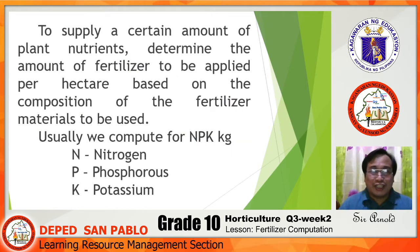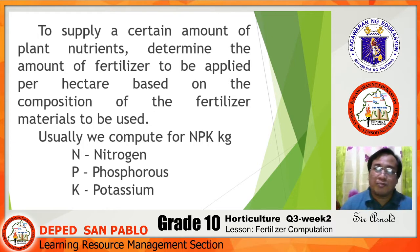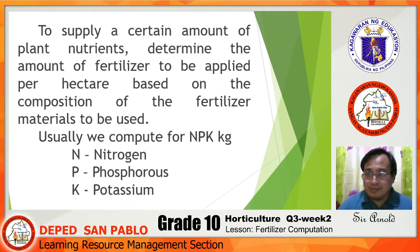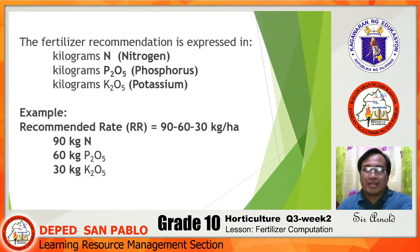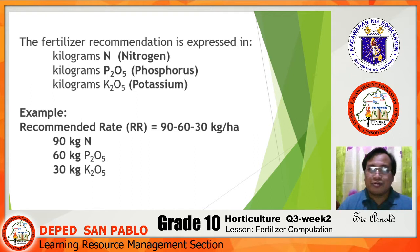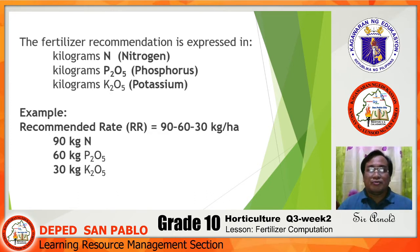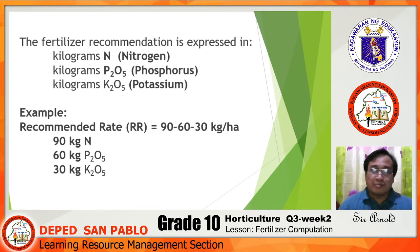To supply a certain amount of plant nutrients, we determine the amount of fertilizer to be applied per hectare based on the composition of the fertilizer materials. We compute the NPK — N for nitrogen, P for phosphorus, and K for potassium — in kilograms. For example, a recommended rate (RR) of 90-60-30 kg/ha means 90 kg of N, 60 kg of phosphorus, and 30 kg of potassium.